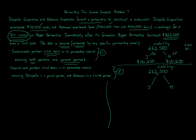Now in situation two, Jalapeno is a general partner and Habanero is a limited partner. If you're a limited partner, creditors cannot go after your personal assets. As a general partner, Jalapeno can be personally pursued. So in cases where you have a general partner and a limited partner with a recourse liability, you no longer use the profit/loss ratio — you focus on who bears the economic risk.